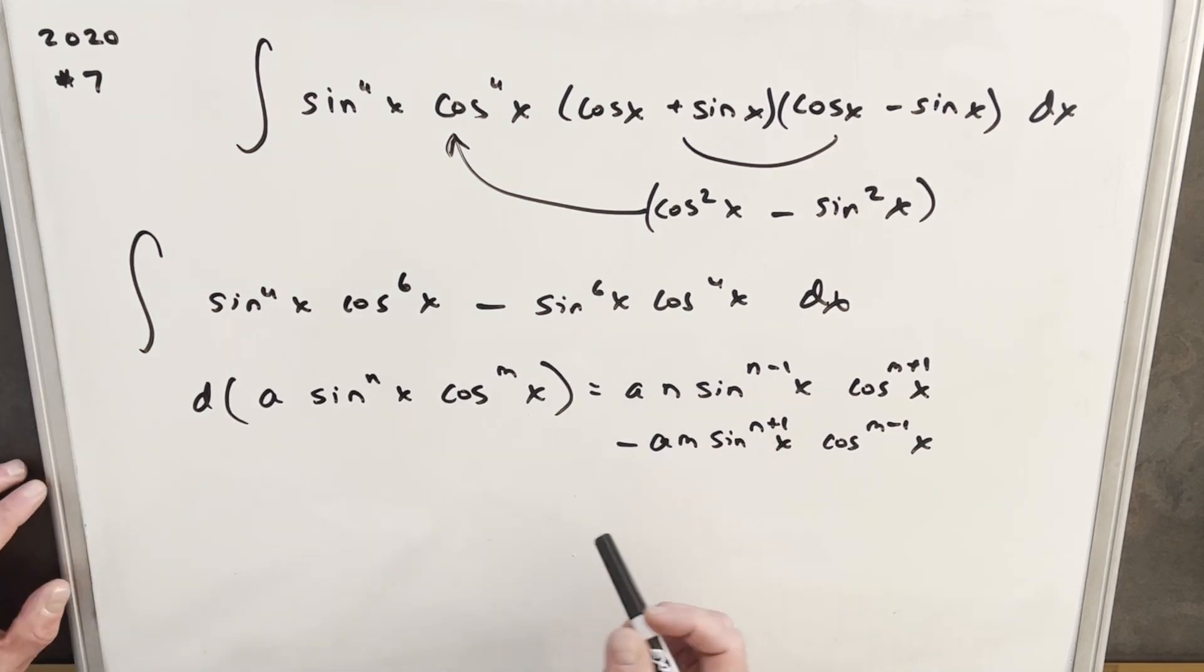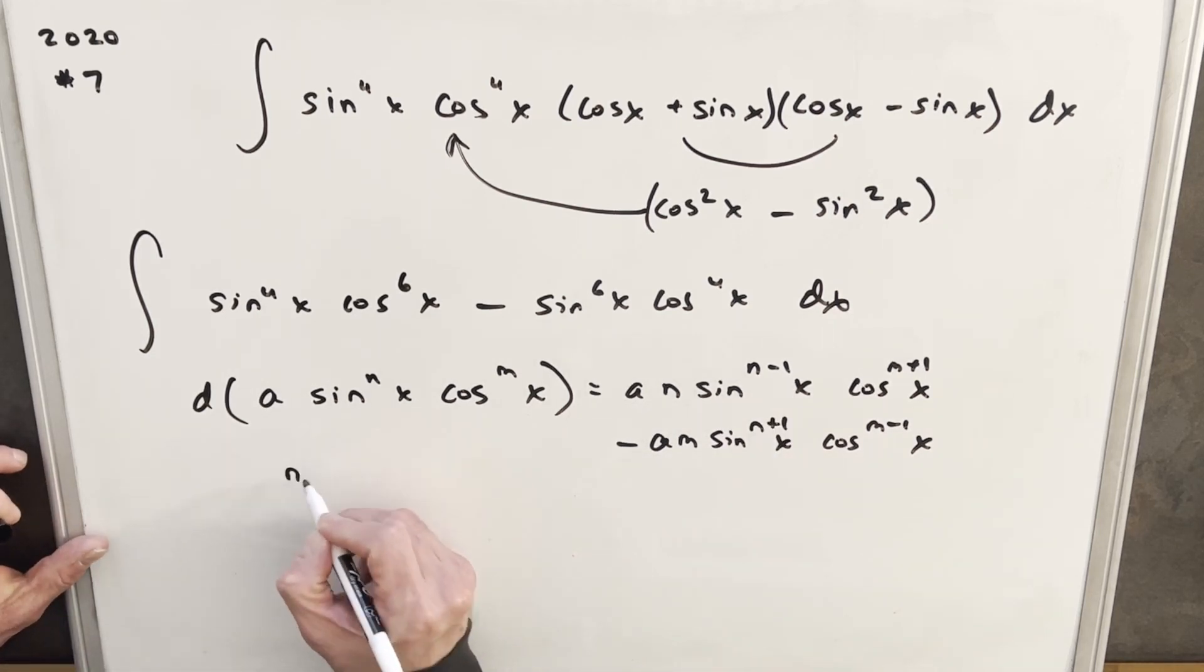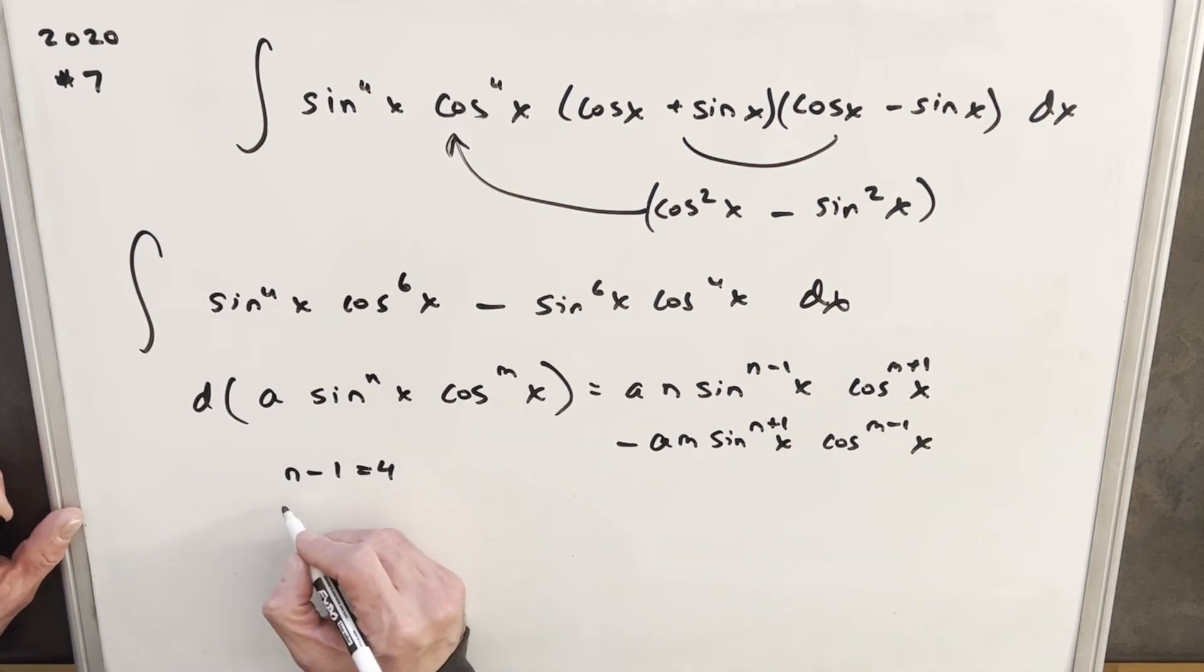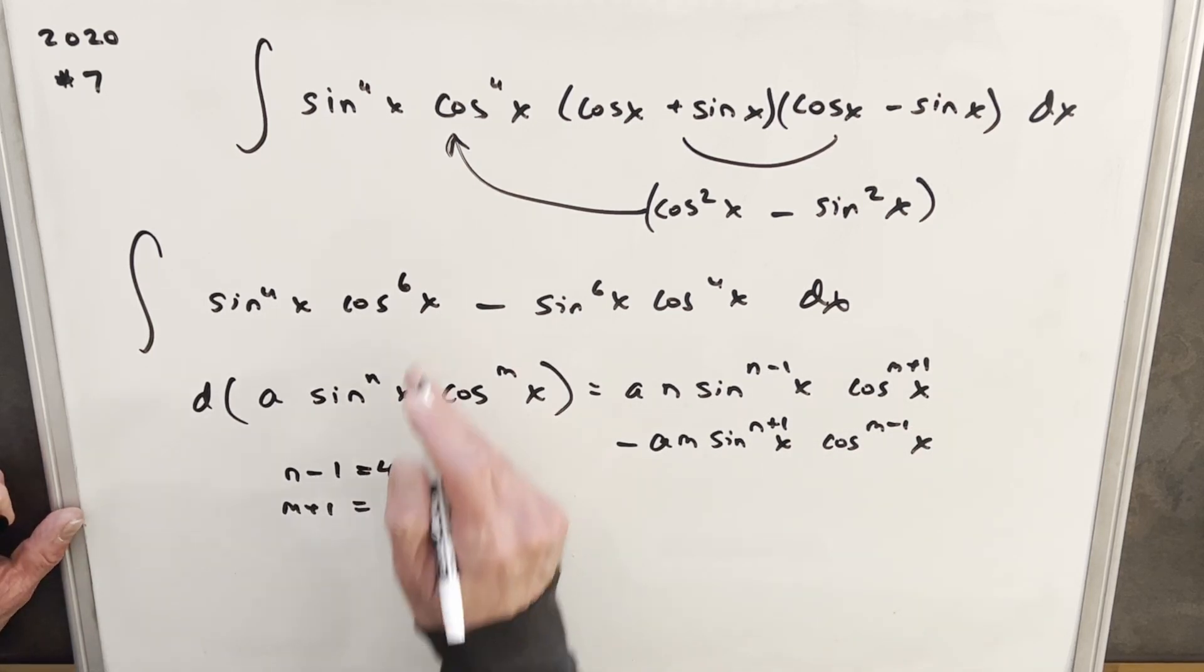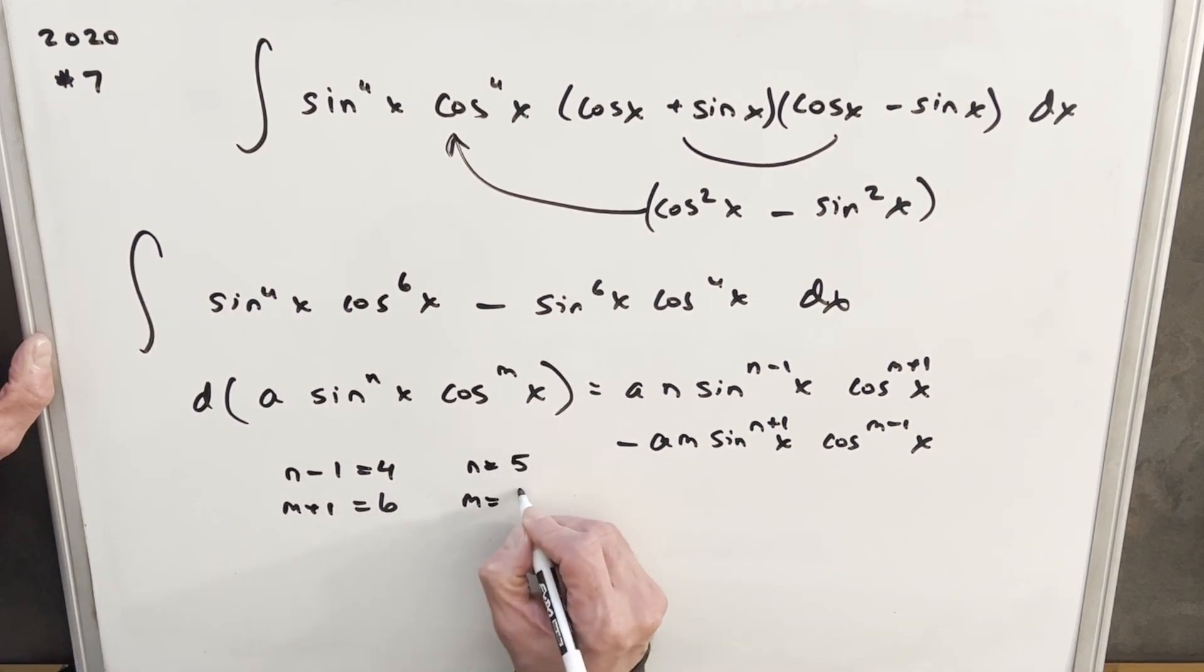So first of all, let's look at this as if it lines up here. Like we're saying if this works, then we're saying n minus 1 needs to equal 4. And then m plus 1 has to equal 6. And that's really easy. That gives us a value of n equal to 5 and a value of m equal to 5.